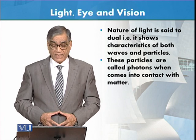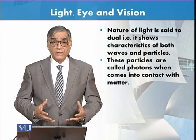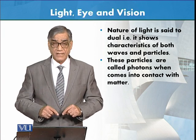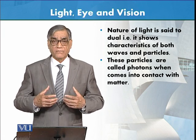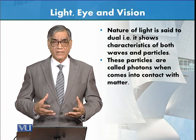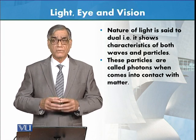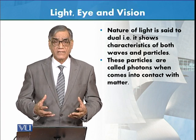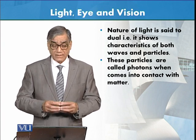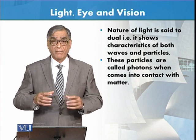Now, the nature of light is said to be dual. Why dual? Because it shows characteristics of both waves and particles. Physicists worked out that light is composed of photons — these are packets, particles called photons — which when they come into contact with matter behave accordingly.